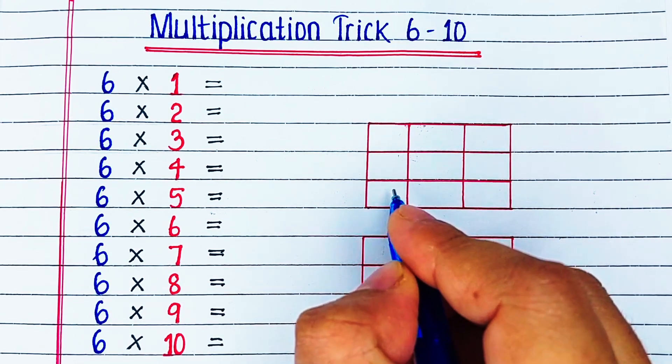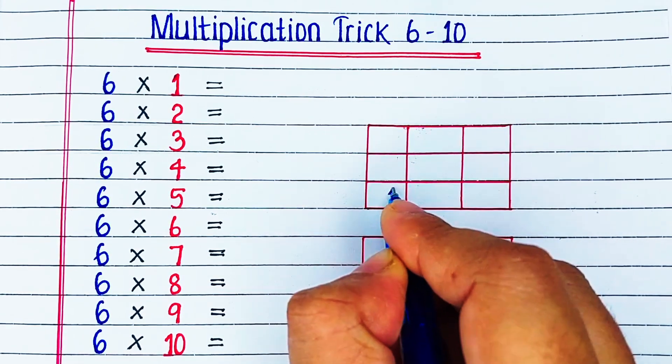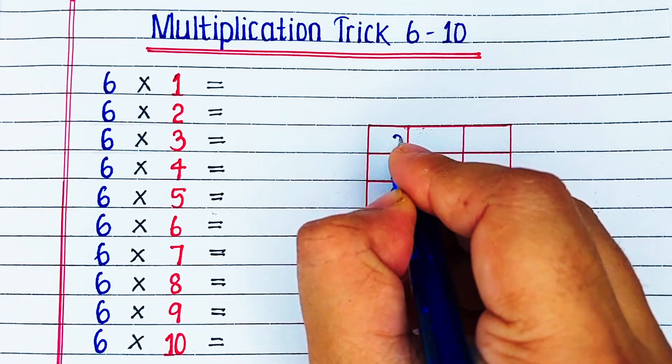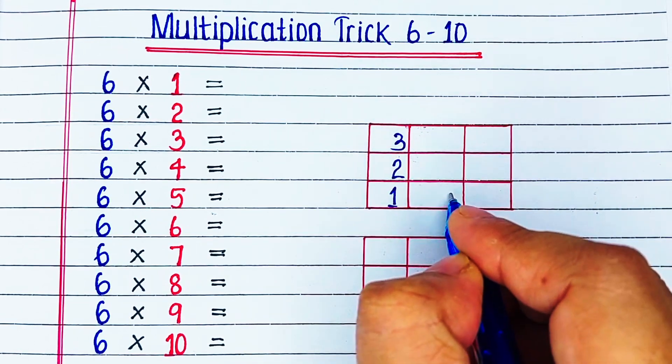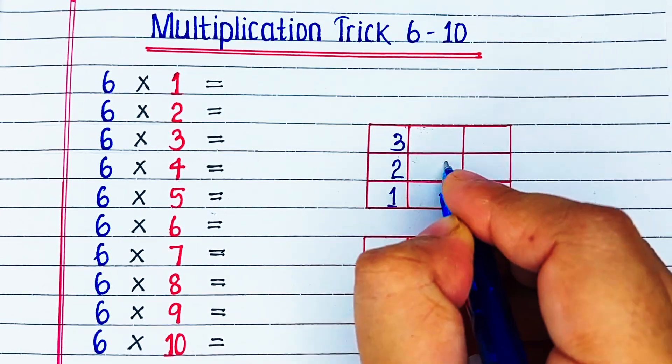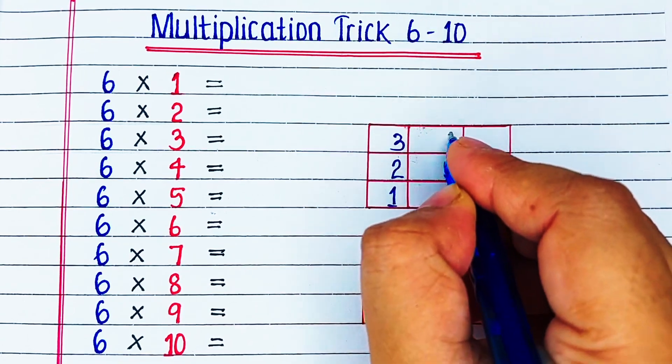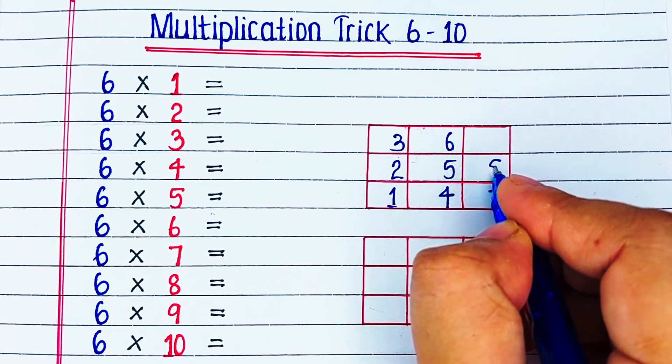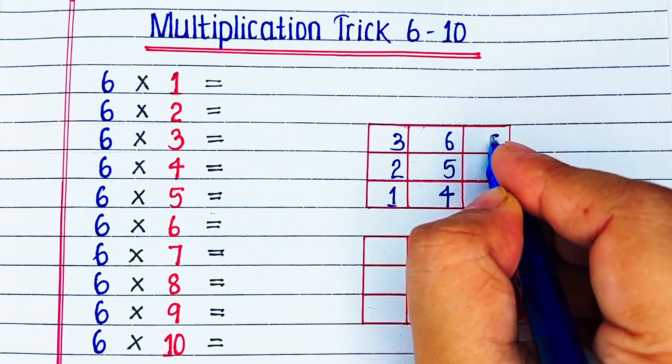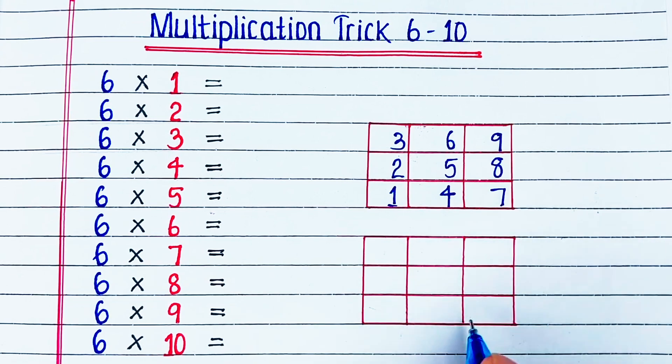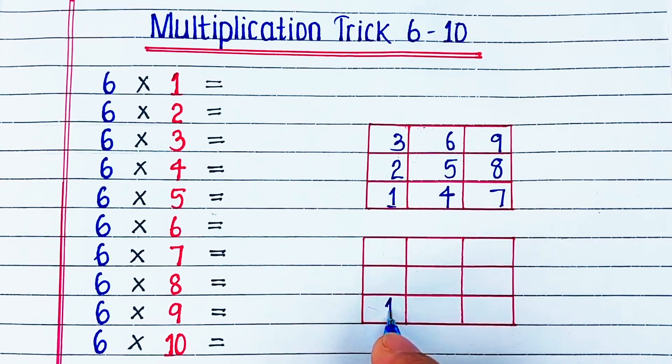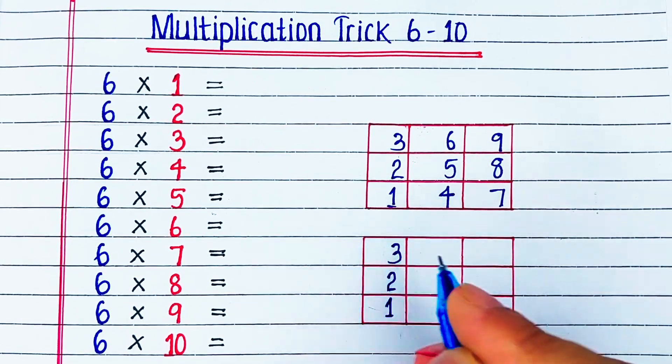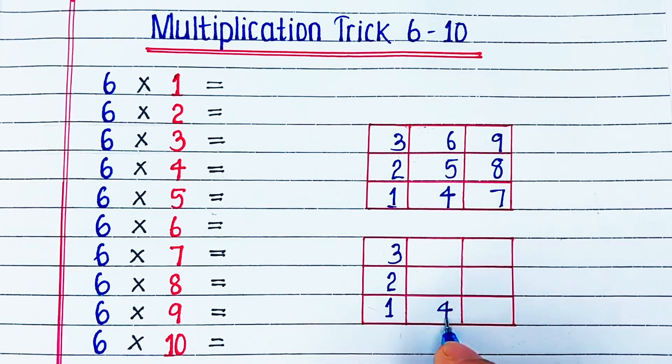Multiplication table of 6 trick. We will start by drawing two 3x3 grids. Each of them have 3 rows and 3 columns. Then we will start from the bottom left corner and start writing 1 to 9 in such a manner that the least number is written at the bottom, like shown in the video. We will repeat the same for the other grid too.